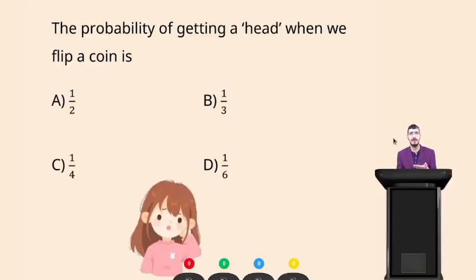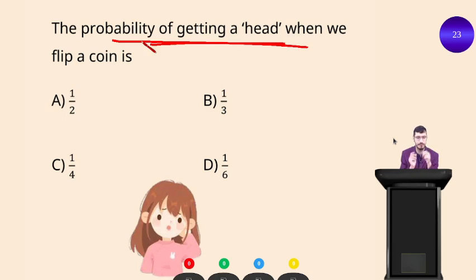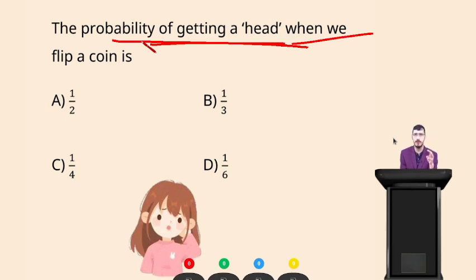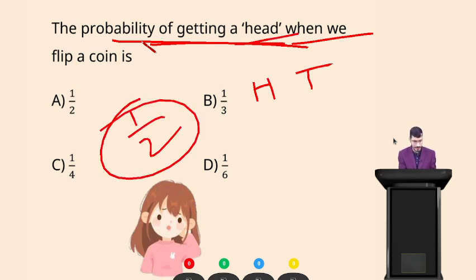Question time: the probability of getting a head when we flip a coin — options A: 1 by 2; B: 1 by 3; C: 1 by 4; D: 1 by 6. When we flip a coin, total outcomes are 2 and getting a head is 1 possible outcome, so probability = 1 by 2. The right answer is option A.